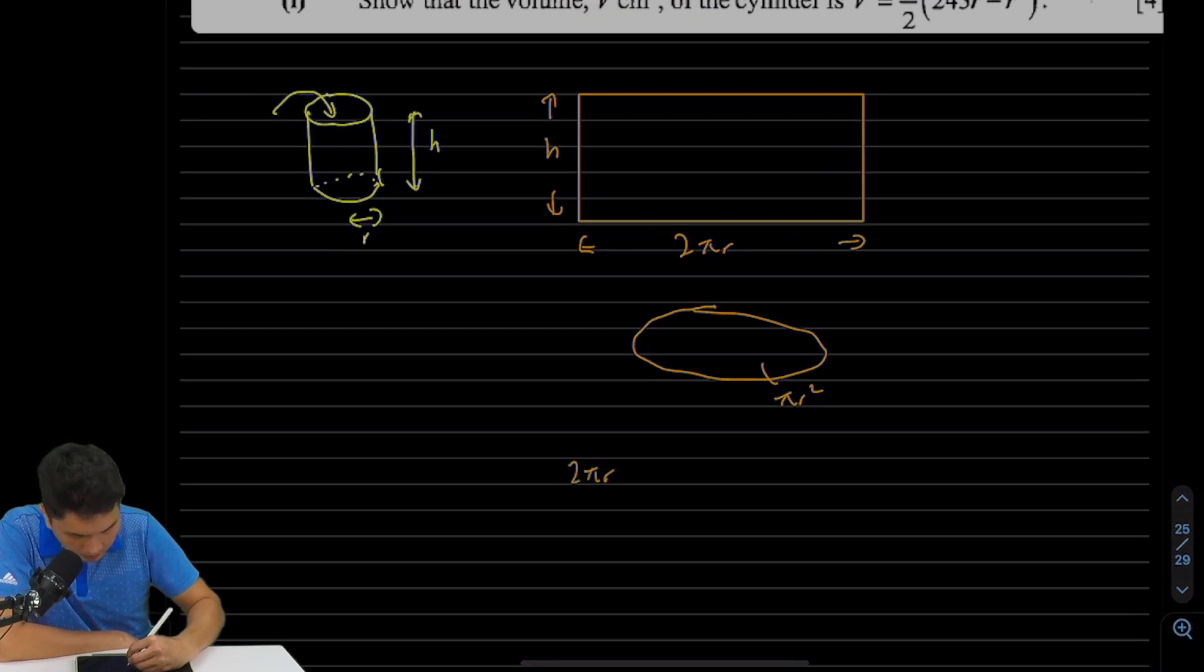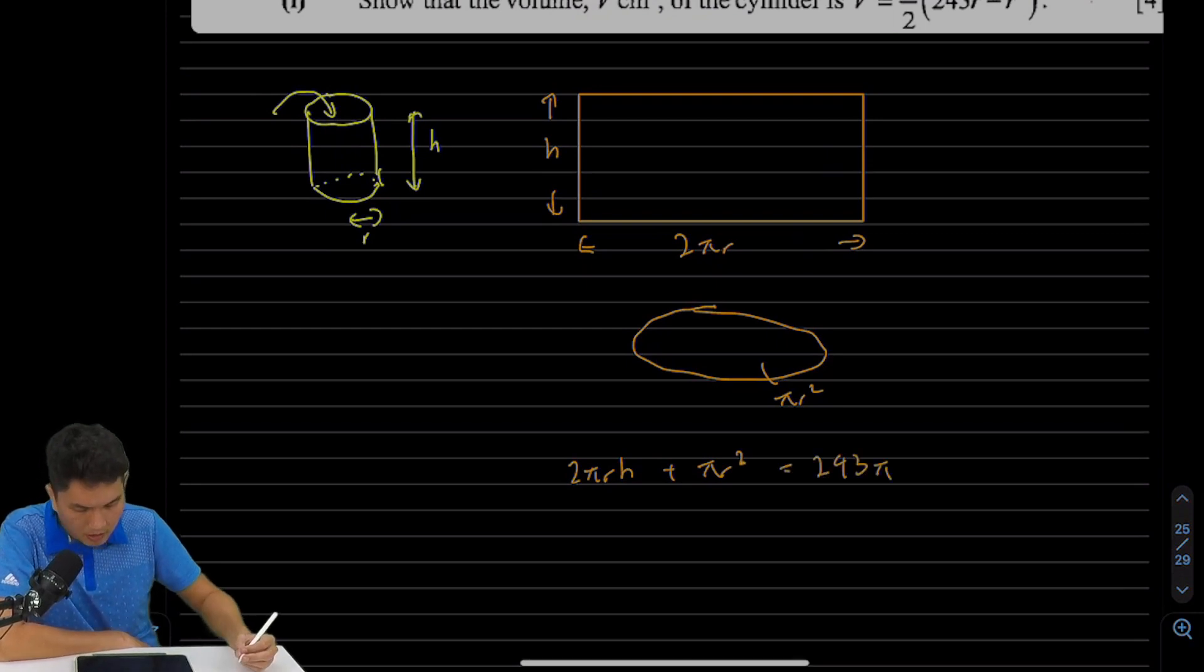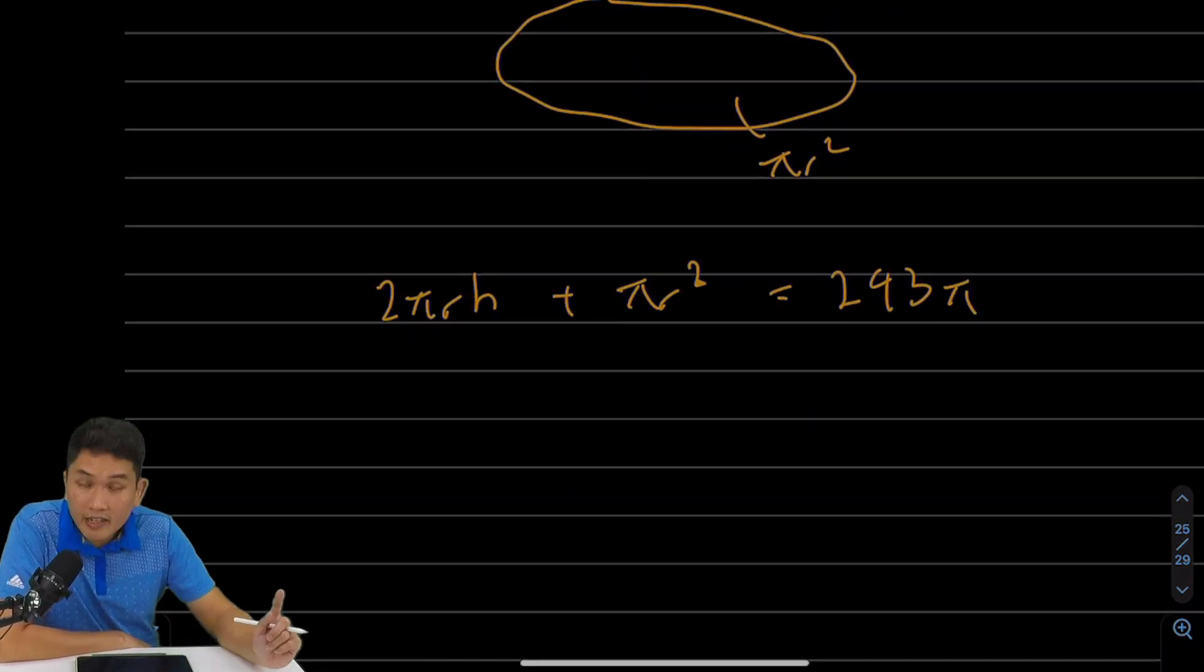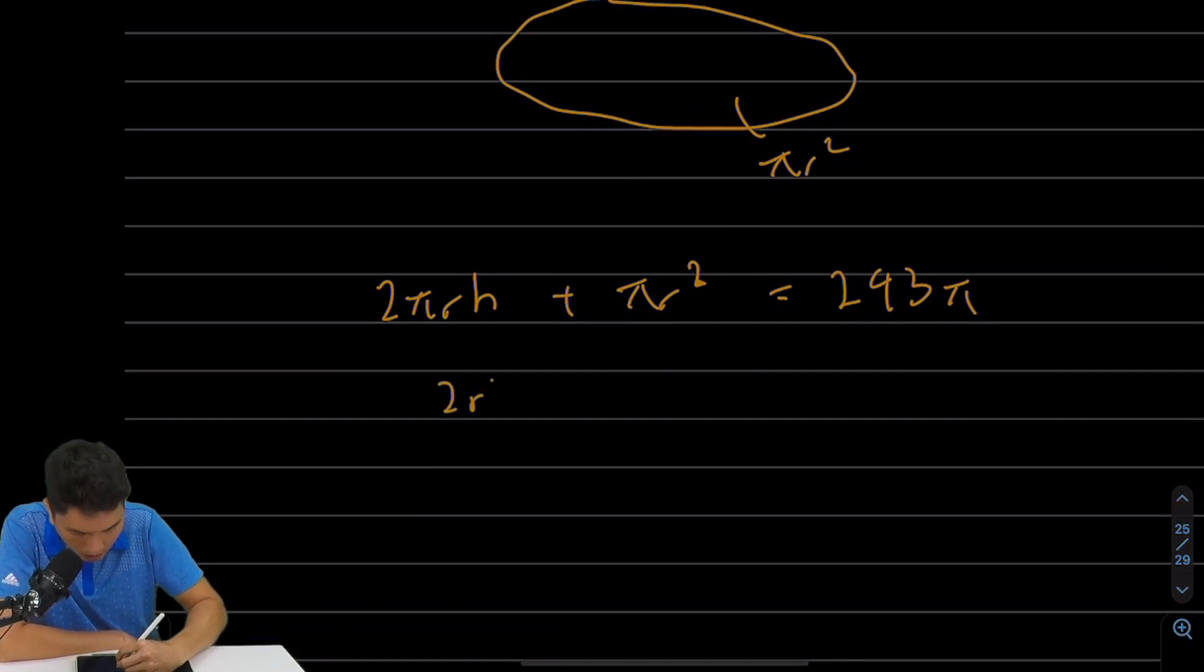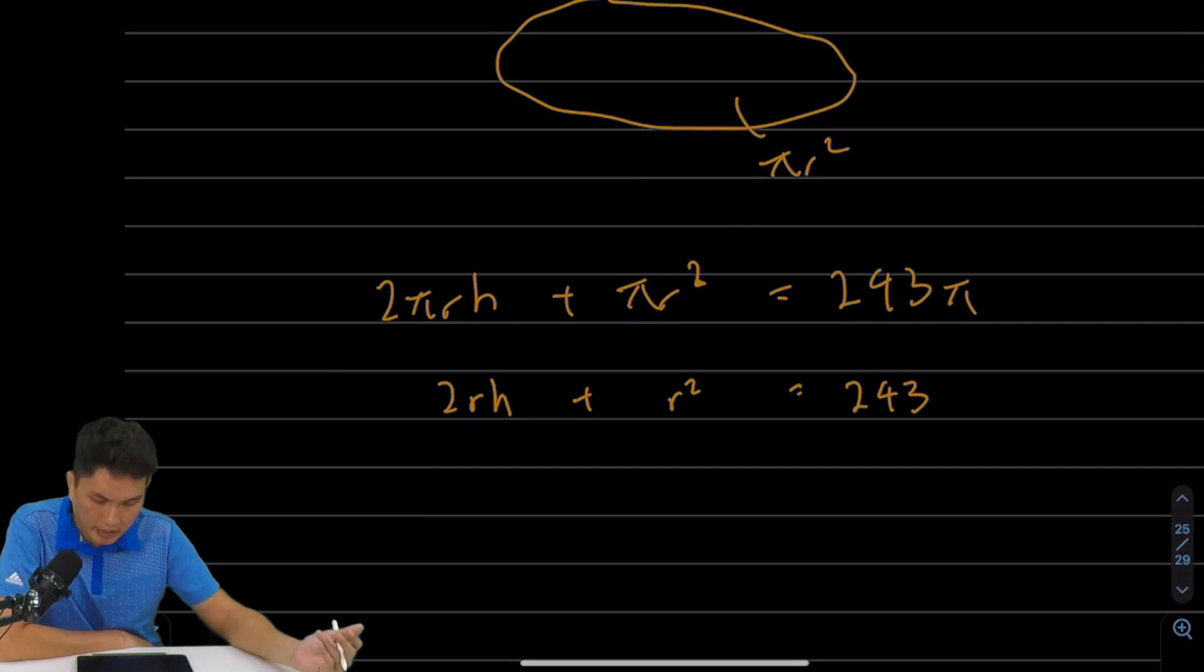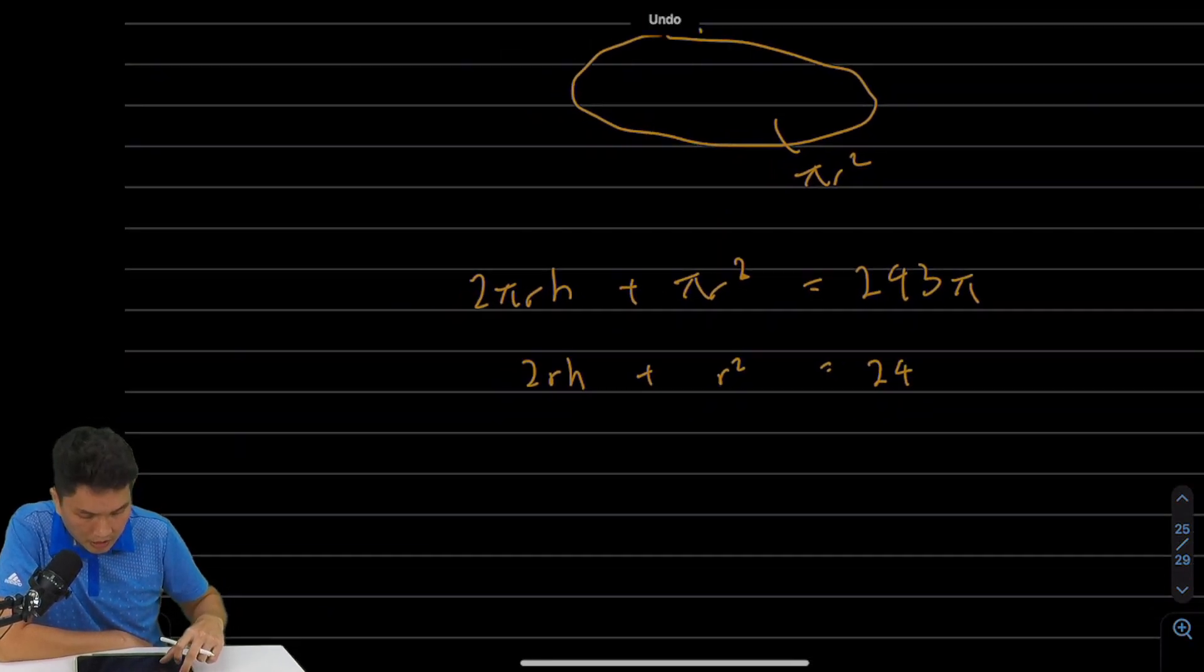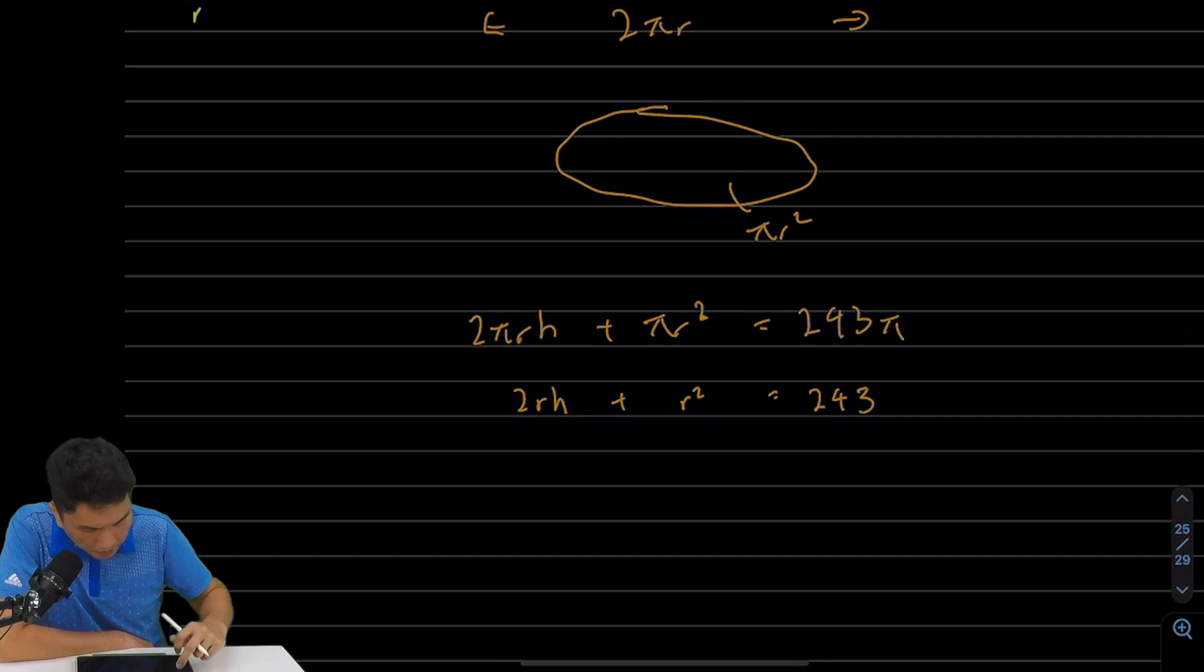So my rectangle, 2πrh plus my circle, πr² can only be 243π. So let me zoom in a bit to make my handwriting slightly more bearable. You notice that I can divide by π throughout the left and the right. So dividing by π, I get 2rh + r² = 243. And I guess this is where students get stuck. They'll be like, okay, so what do I do? Do I solve for r? What do I do next? So here's a bit of experience and a tip on how to do this kind of questions.